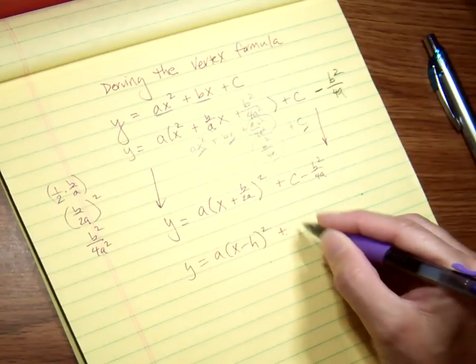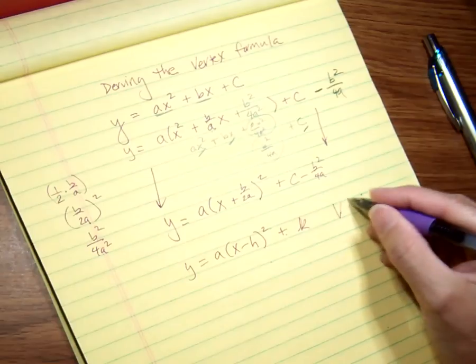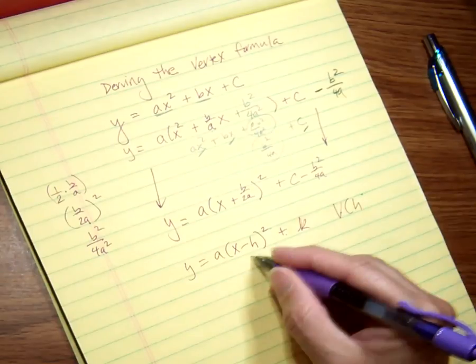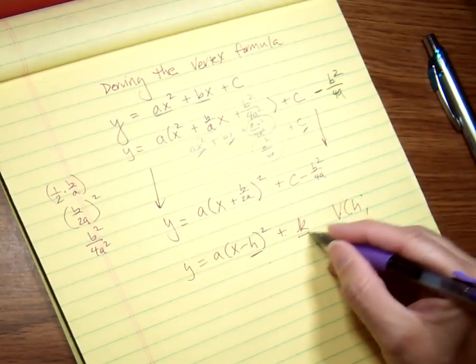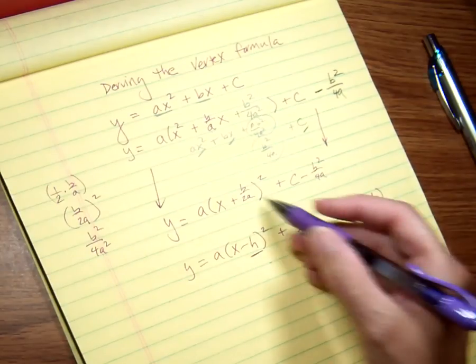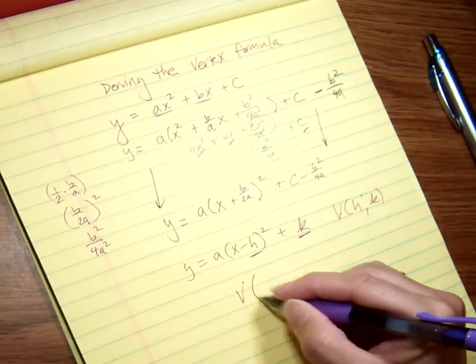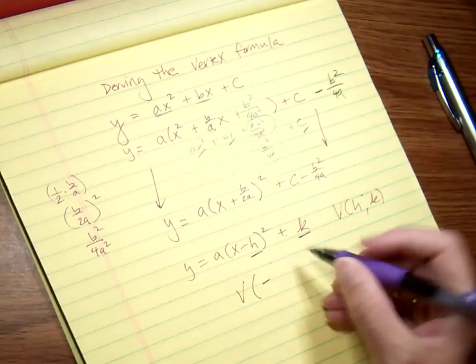And then the rest of this—the C minus B²/4A—I'm going to kind of ignore it, because once we got our parabolas or our quadratics forced into this form, then what we had was (x - h)² + k, and our vertex was the opposite of this number and the same as this number.